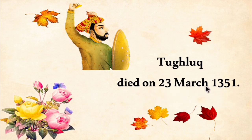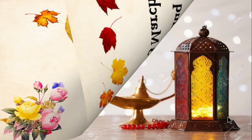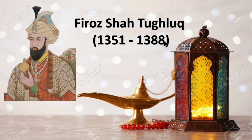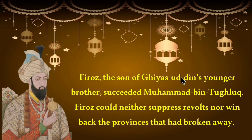Tughlaq died on 23rd March 1351 AD. After him, Feroz Shah Tughlaq ascended the throne, ruling from 1351 to 1388. Feroz was the son of Giyas Uddin's younger brother. He could neither suppress revolts nor win back the provinces that had broken away, and showed no interest in reconquering the southern provinces.